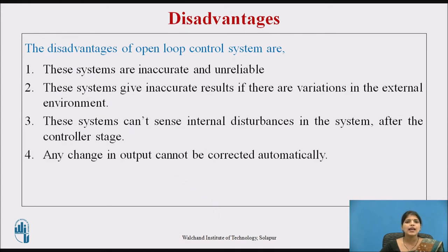These are the disadvantages of the open loop system. First, these systems are inaccurate and unreliable because accuracy is totally dependent on the accurate pre-calibration of the controller. Second, these systems give inaccurate results if there are variations in the external environment, and cannot sense internal disturbances in the system after the controller stage. Third, any change in the output cannot be corrected automatically, so the controller must be maintained for accuracy and quality from time to time.